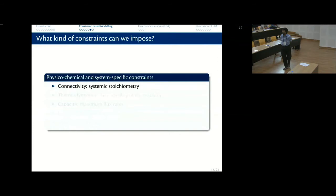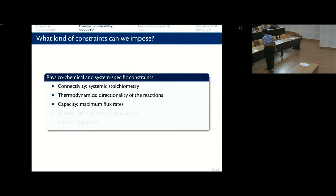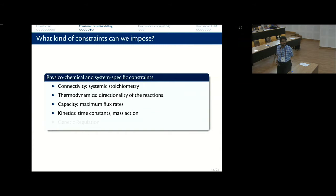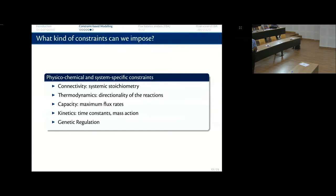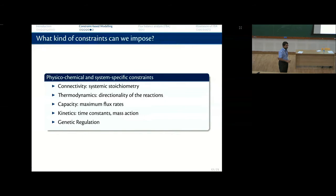What kind of constraints can we impose? Classically: system stoichiometry, directionality of reactions, flux rates — how much enzyme, what are the enzyme turnover numbers, how much substrate can be converted to product. There's only so much a particular enzyme can do. Even kinetics with some time constants can be brought in. Very useful is regulation, and nowadays it's become much easier to integrate regulatory data because you have a lot of transcriptomic data sets available.